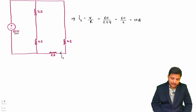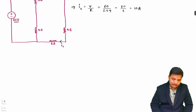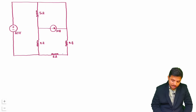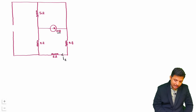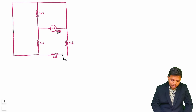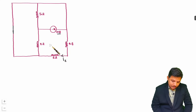Now I'll calculate the current I2 passing through the 2-ohm resistor due to the 10A current source. I redraw the circuit and short-circuit the 60V voltage source. When you look at this redrawn circuit, the connection appears a bit awkward, so let's redraw it more clearly. I label points A and B. Between A and B, the 10A current source is connected. I then identify how the 5-ohm resistor is connected between A and B.